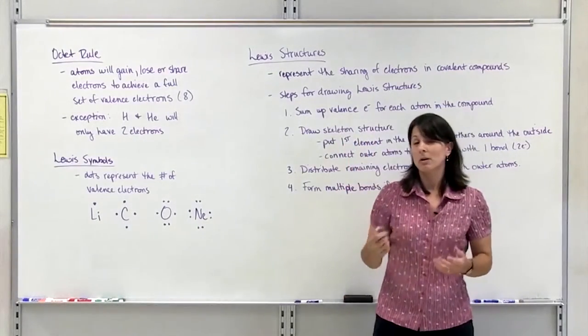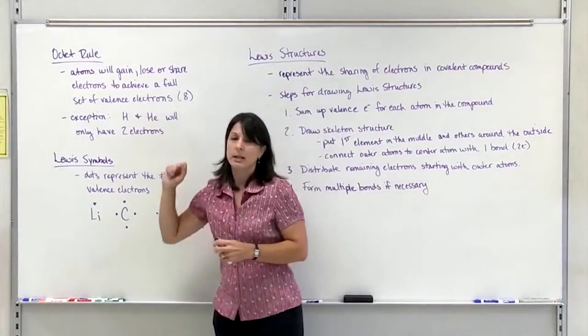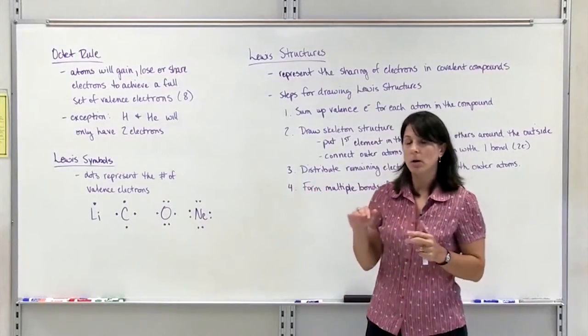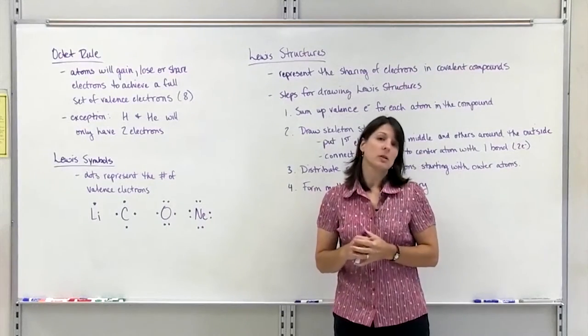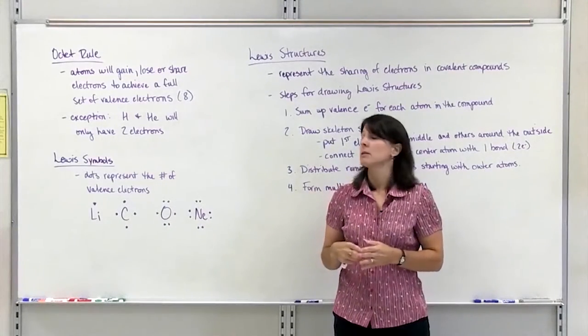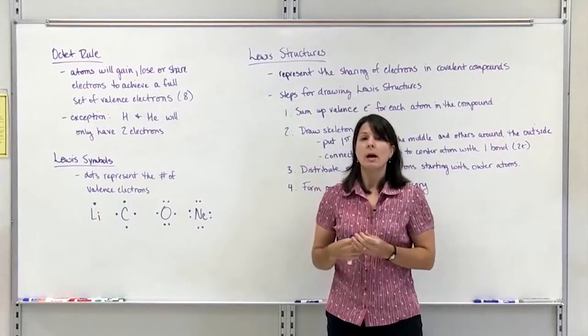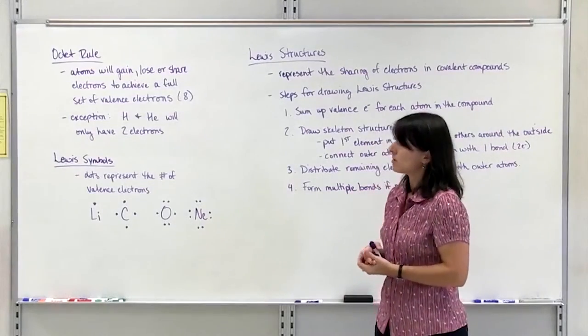However, there are a couple of exceptions to the octet rule, and those are hydrogen and helium. Since hydrogen and helium are on the first row of the periodic table, a full set of valence electrons consists of only 2 valence electrons. So hydrogen and helium will only have 2. All the other elements on the periodic table will try to achieve 8 valence electrons.